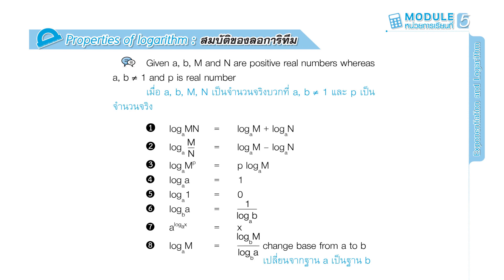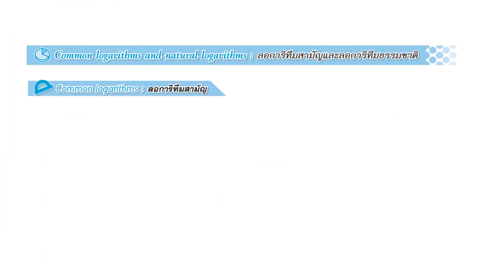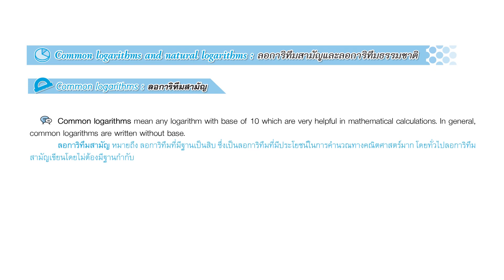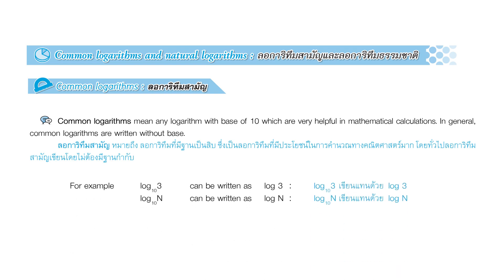Change of base from a to b. Common logarithms and natural logarithms. Common logarithms mean a logarithm with base 10, which are helpful in mathematical calculations. In general, common logarithms are written without a base. For example, log 3 base 10 can be written as log 3, and log n base 10 can be written as log n.